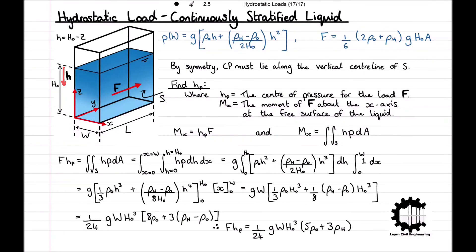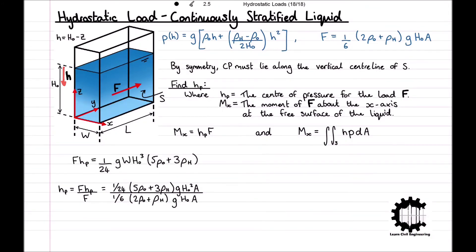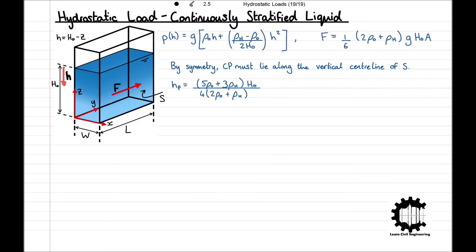Combining the equations for F·h_p and F, we get h_p = F·h_p / F = [(1/24)·(5·rho_0 + 3·rho_h)·g·h_0²·A] / [(1/6)·(2·rho_0 + rho_h)·g·h_0·A], which simplifies to h_p = (5·rho_0 + 3·rho_h)·h_0 / [4·(2·rho_0 + rho_h)]. Now substituting the given values: h_0 = 6.5 m, W = 12.5 m, rho_0 = 1000 kg/m³, rho_h = 1115 kg/m³.